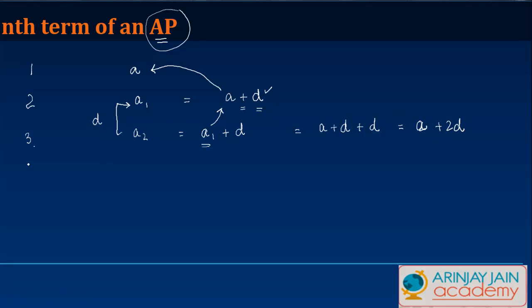Continuing in this manner, if I look at the fourth term, it can be written as A3, which is what? Note the last term, the preceding term A2 plus D. But again, A2 can be written as A plus 2D.